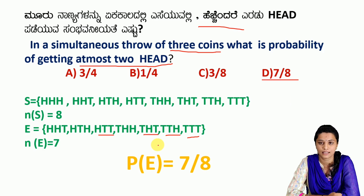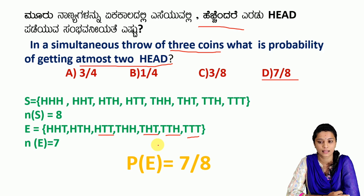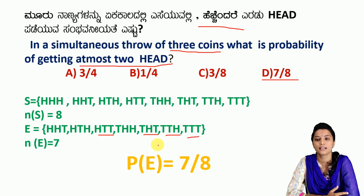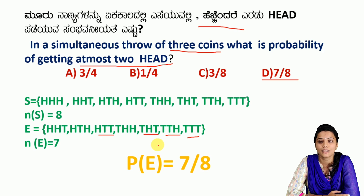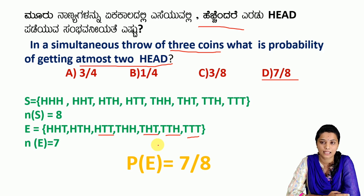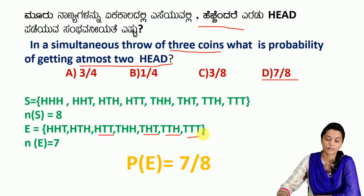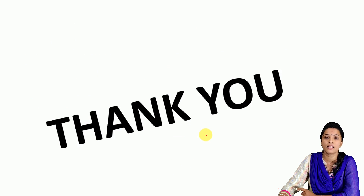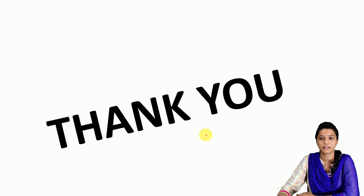If you ask questions like exactly two heads, exactly one tail, no tail, or no head, these are the same types of questions. Please practice using sample space — it will be easy. In the next class, we will concentrate on dice. This class ends here. Thank you.